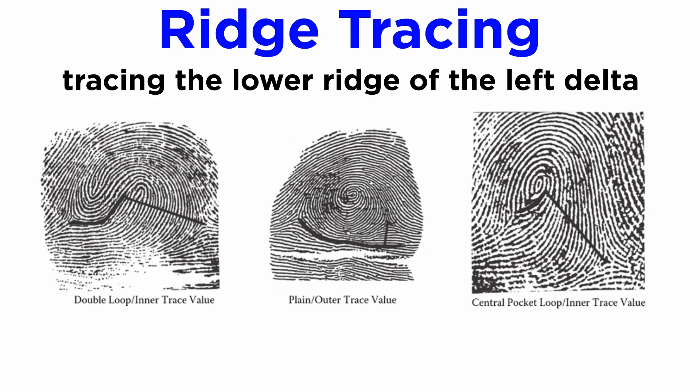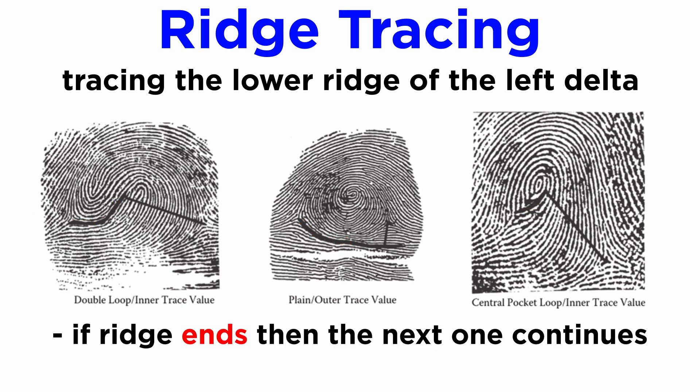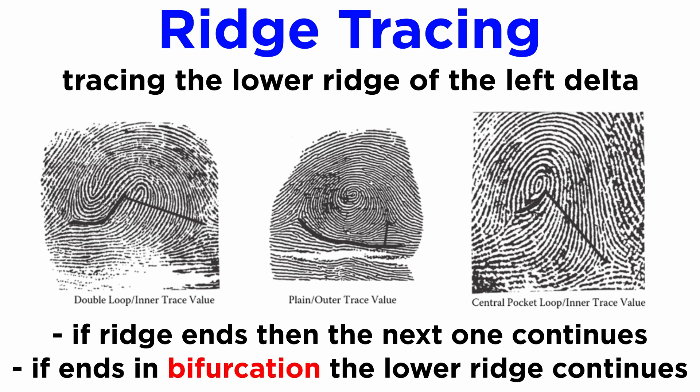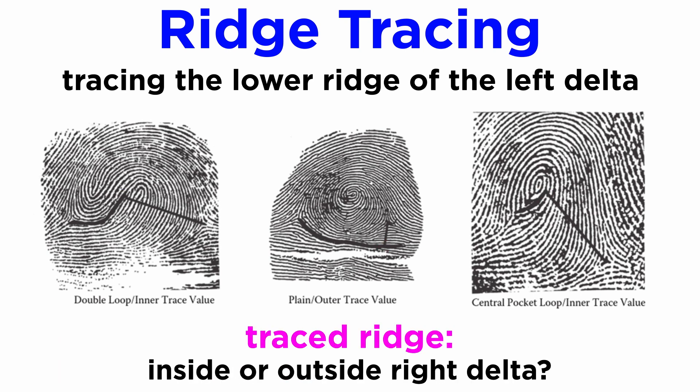Ridge tracing is slightly more complicated than ridge counting. A ridge is traced — specifically, the lower ridge of the left delta as shown in the pattern here. The path of the lower ridge of the left delta is traced towards the right delta. If the ridge ends abruptly, the immediate following ridge is continued to be traced. If the traced ridge ends in a bifurcation, the lower ridge of the bifurcation is continued. The ridge is traced until it reaches the point closest to the right delta. Whorl patterns can then be classified depending on whether the traced ridge falls inside or outside of the right delta.